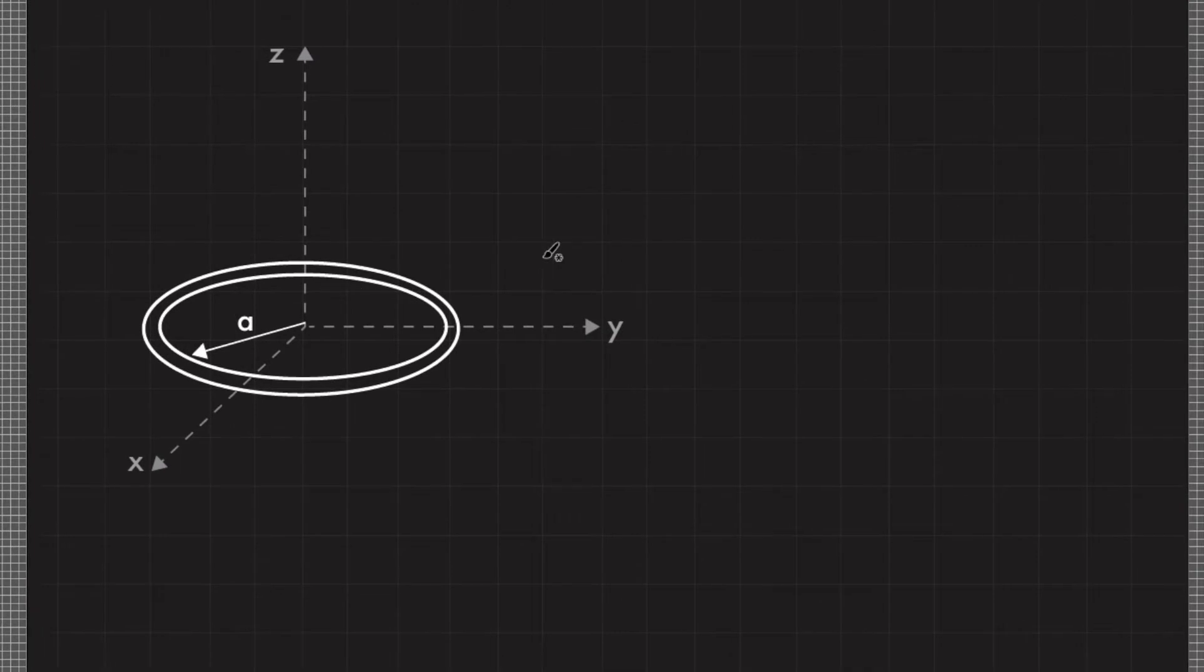This current loop sits on the x-y plane and it has a current that flows in this direction as shown in the figure. To make calculations easier, let's form this loop into a perfectly circular loop. The current constantly runs in this manner. So this loop is centered at the origin and has a radius A.